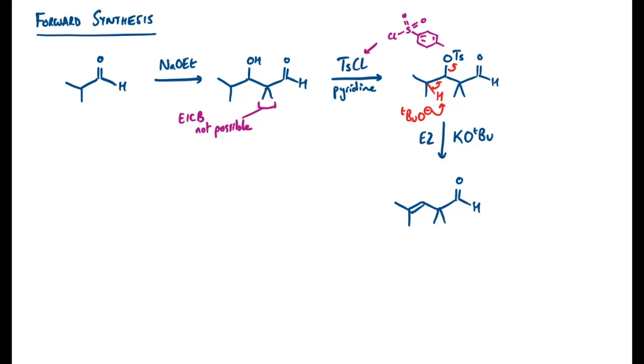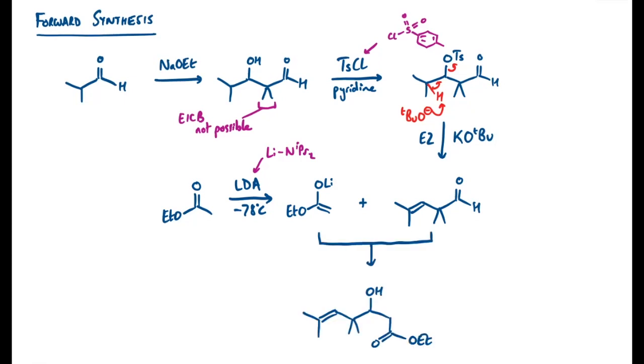The next step was to do an aldol reaction, so I need to react this with the enolate of ethyl acetate. An easy way to form an enolate here would just be to form the lithium enolate using LDA at minus 78 degrees. LDA is a strong irreversible deprotonating agent with this structure, which is bulky enough not to be nucleophilic into the ester at minus 78 degrees C.